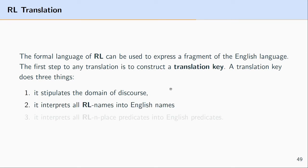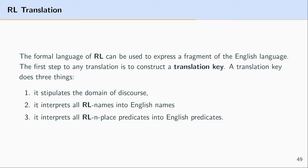The next thing we need is an interpretation of all predicate logic names into English names — a way of translating lowercase a, b, c, d into proper names or terms that pick out single objects. The final thing we need is a translation method for n-place predicates into English predicates.